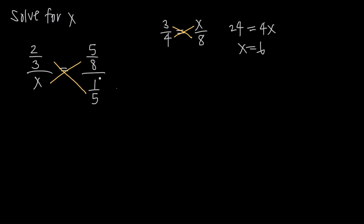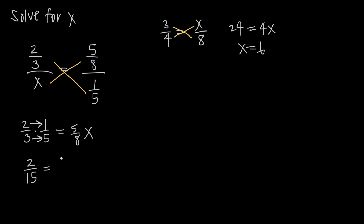When we cross multiply, we get 2 thirds times 1 fifth on the left-hand side. We set that equal to whatever we get when we cross multiply the other way: x times 5 eighths, so we just get 5 eighths x. Now remember, when we multiply fractions, we multiply our numerators together to get the new numerator and our denominators together to get the new denominator. So 2 times 1 gives us 2, and 3 times 5 gives us 15.